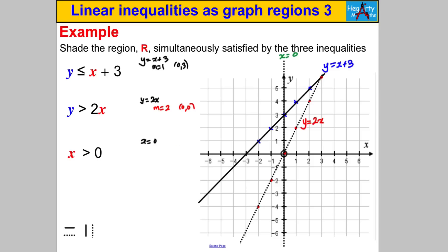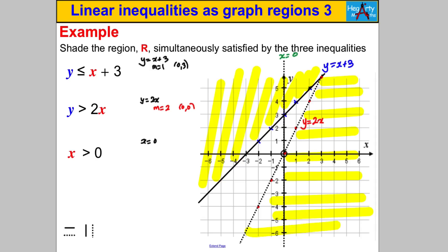Now for shading: y = x + 3 is the boundary — we want y less than x + 3, i.e., below this line, so shade above it to mark what we don't want. For y = 2x, we want y bigger than 2x, i.e., above the line, so shade below it. For x = 0, we don't want x ≤ 0, so shade the left side. The unshaded region remaining is a clear triangle, which we label R.